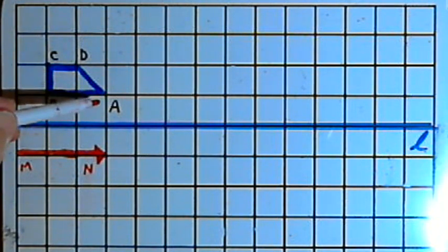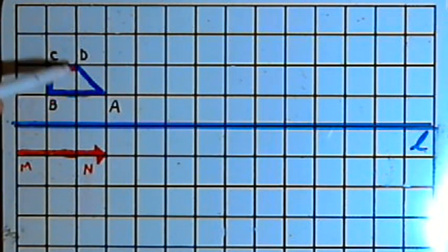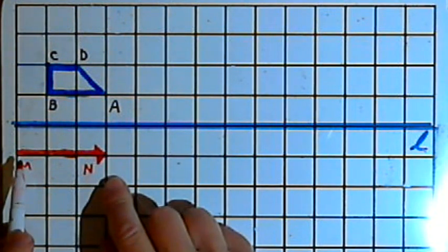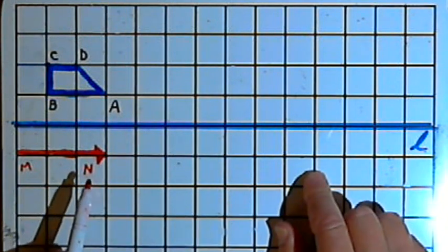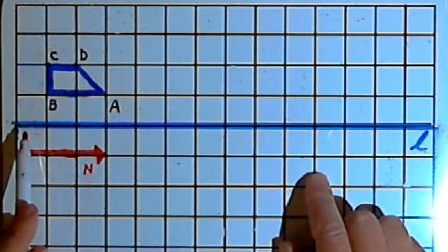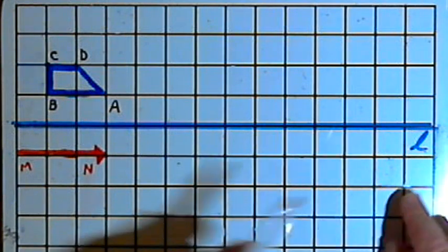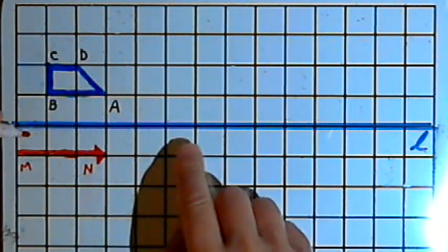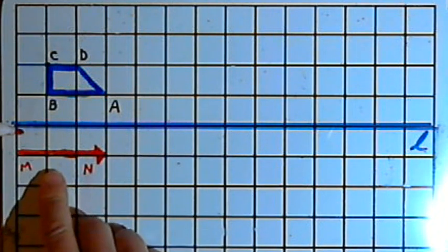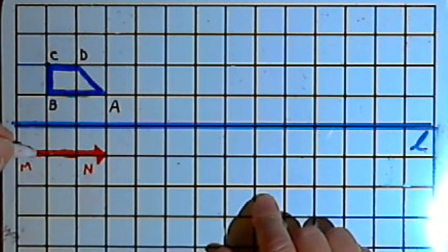For my example I'm going to start out with this blue quadrilateral that I've labeled ABCD. Since we're going to have a translation, I'm going to need a slide arrow or vector, and that will be this red arrow that I've labeled MN. Since we're going to have a reflection, I'll need a line of reflection. That will be this blue line that I've labeled L. Now one of the requirements for your line of reflection and your vector is that they must be parallel to each other.